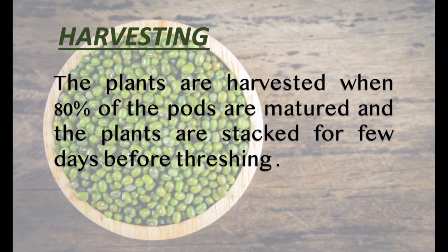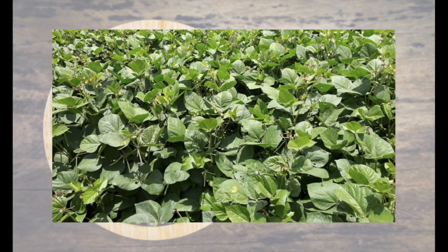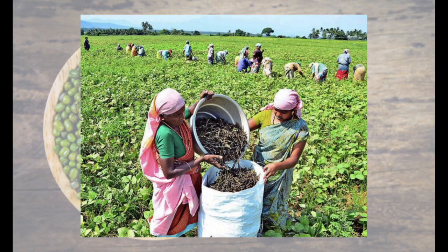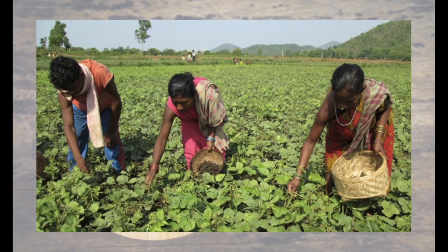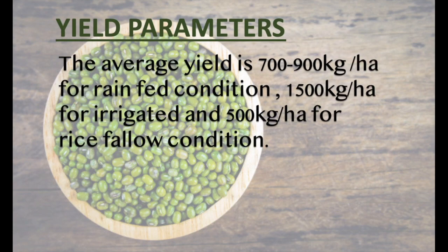Harvesting: The plants are harvested when 80% of pods are matured, and plants are stacked for a few days before threshing. Yield parameters: The average yield is 700–900 kg per hectare for rainfed conditions, 1,500 kg per hectare for irrigated conditions, and 500 kg per hectare for rice fallow conditions.